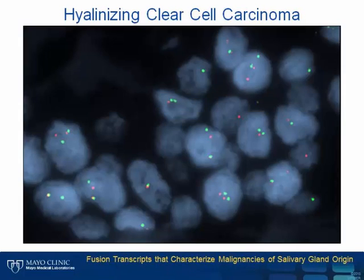This image shows disruption of the EWSR1 gene in a case of hyalinizing clear cell carcinoma. Intact EWSR1 genes are represented by red and green signals that are immediately adjacent to one another, occasionally appearing as yellow or fused signals. Disrupted EWSR1 genes are represented by red and green signals that are significantly separated from one another.